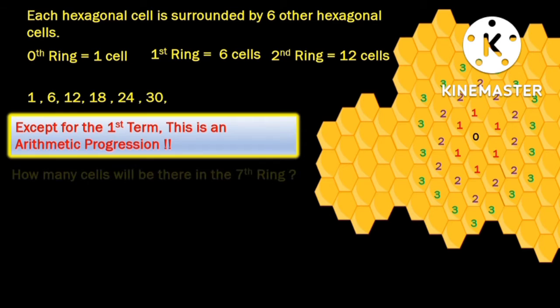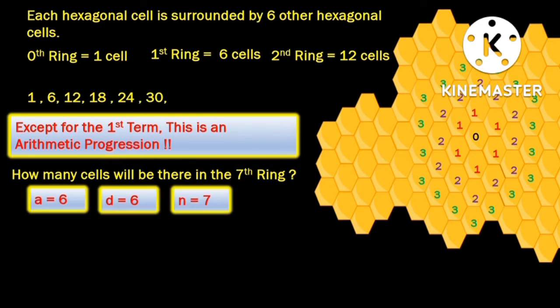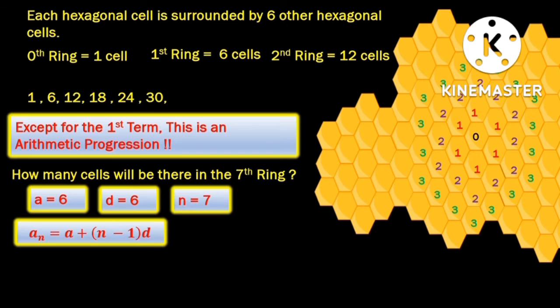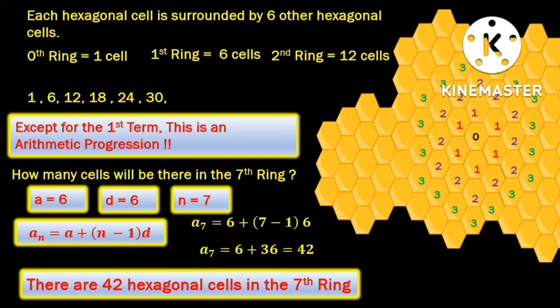So friends, how many cells will there be in, say, the seventh ring? Taking the first term A as 6, the common difference D as 6, and N as 7, we use the nth term of an AP formula and, substituting the values, we find that there are 42 hexagonal cells in the seventh ring. Definitely, we have a lot to learn from the honeybees about arithmetic progression.